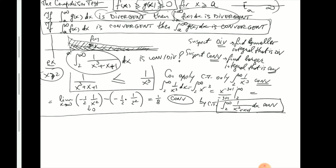Let's go over an example in the other direction — how to use the comparison test when dealing with a divergent integral. Another example: decide if the integral from 2 to ∞ of 1/∛(x² − 1) dx converges or diverges. That is a positive function on [2, ∞). You might notice that the dominant power of x is 2/3 — looking at just the leading term x² under the cube root gives x^(2/3). When the leading term has a power less than 1, this usually suggests the integral is divergent.